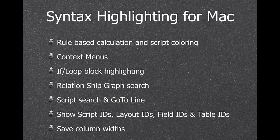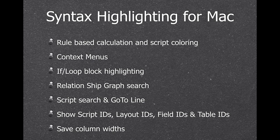The MBS plugin offers a rule-based syntax highlighting for Mac, so you can define which script steps show in which color. We offer a context menu to run menus right on mouse click. We highlight the loops in a script, allow you to search the relationship graph, search within the current script and jump to a line by line number. We can show you the script IDs, layout IDs, field IDs and table IDs so you can use them with the plugin functions. If you have the layout dialog or database fields dialogs open, we also remember the column widths so you don't need to resize the columns every time you open those dialogs.